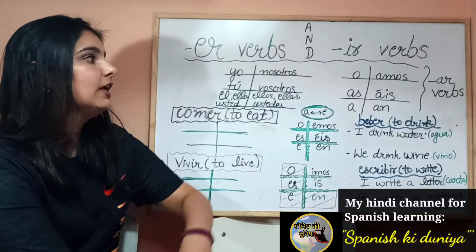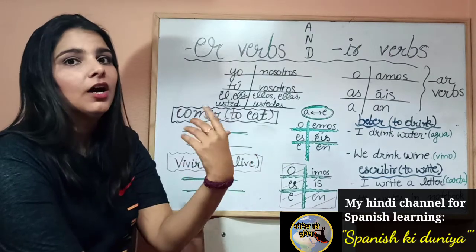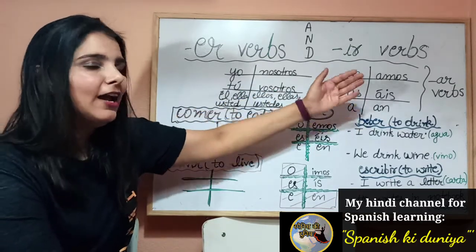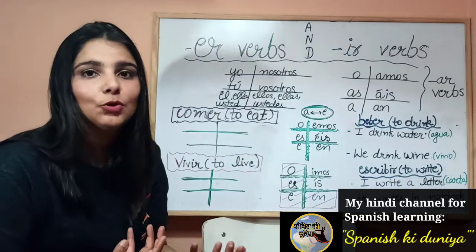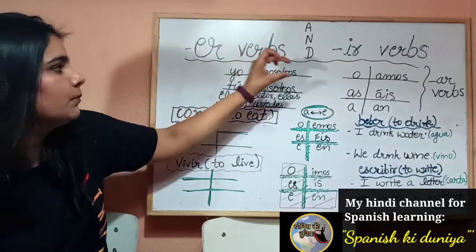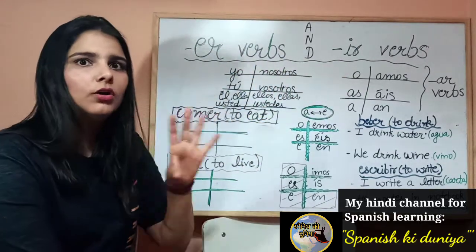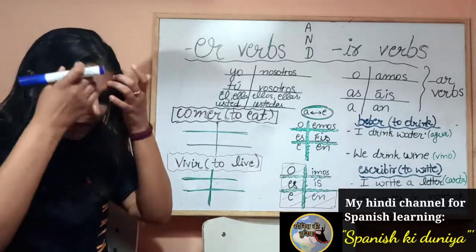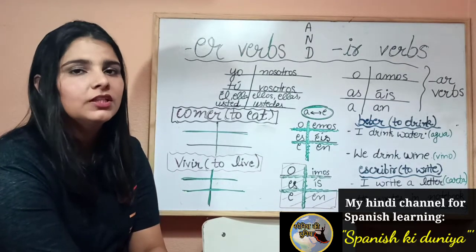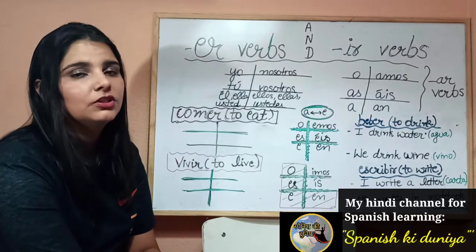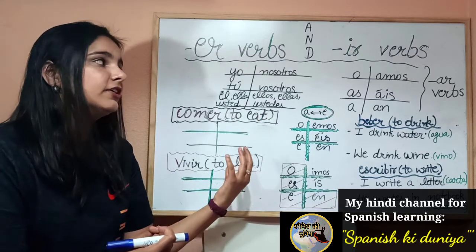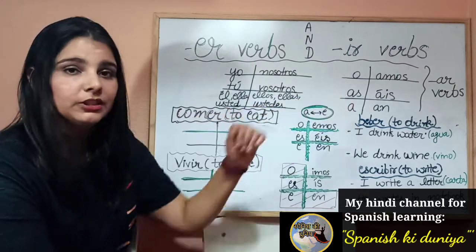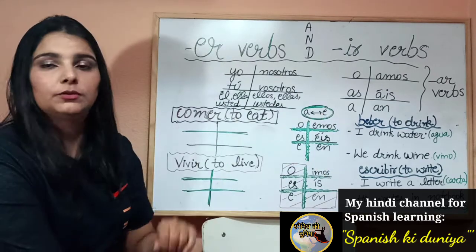We learned that in AR words the suffix or termination is removed and replaced by O, AS, A, AMOS, AIS, AN. Now when you know how the AR termination works, learning the ER termination becomes much easier because the difference between AR and ER is very small. The only thing to keep in mind is wherever we have 'la A de español,' replace it by 'la E de español.' That is the only difference.